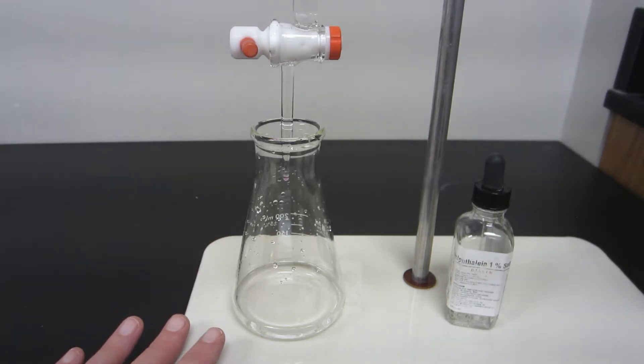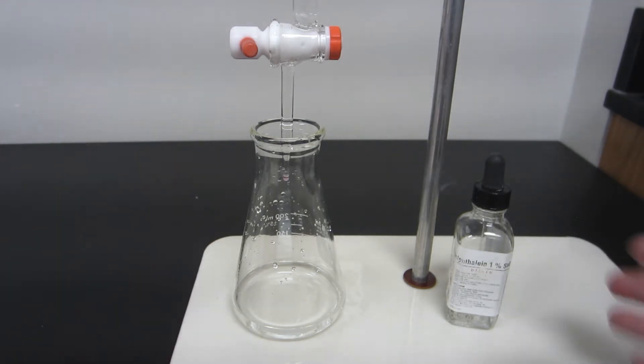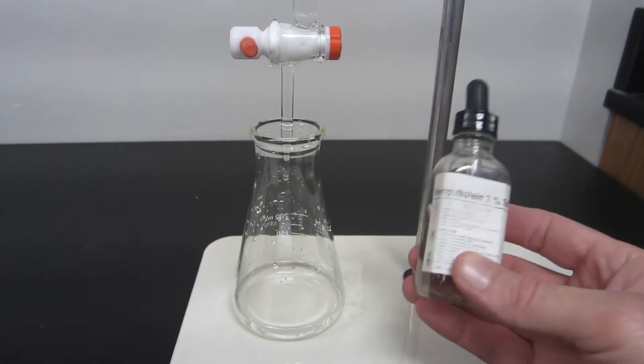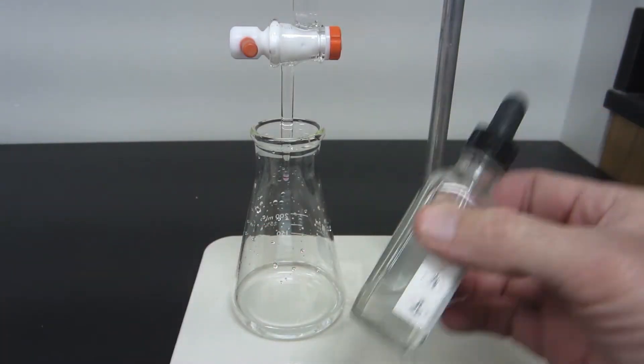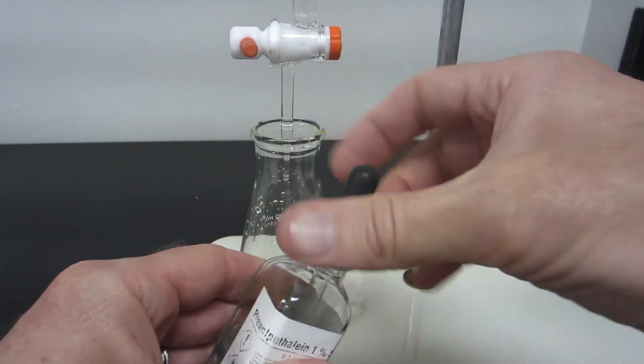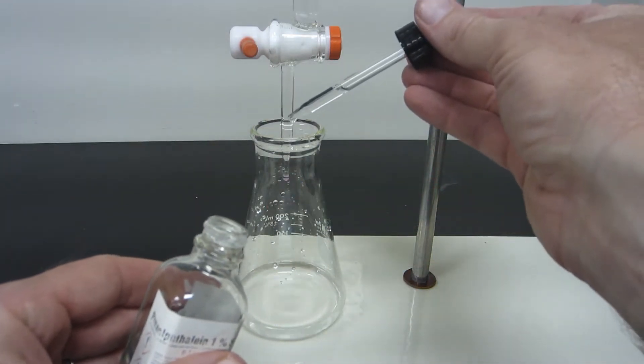The burette is ready to go, so it has that measurement that you just saw a second ago. Before we start, we're going to use an indicator called phenolphthalein. You can see it's just a clear colorless solution, and this molecule, you only need a couple drops in there.